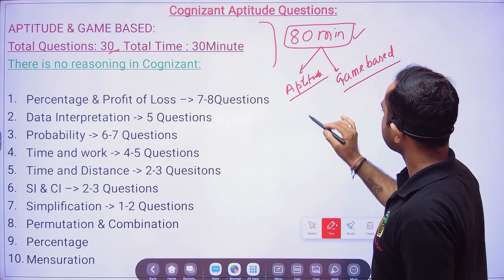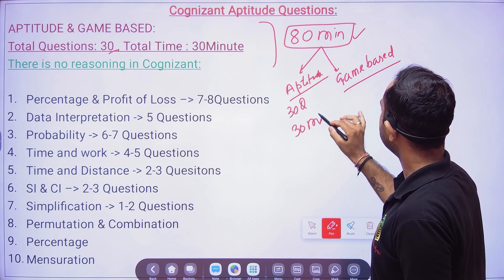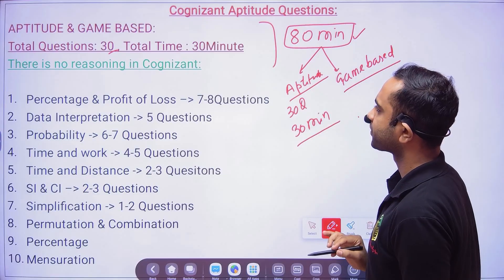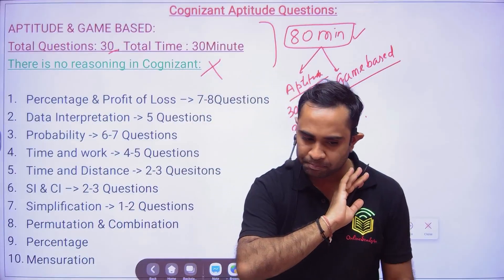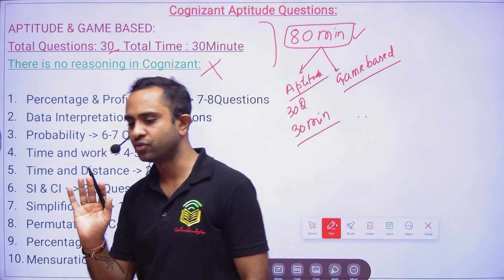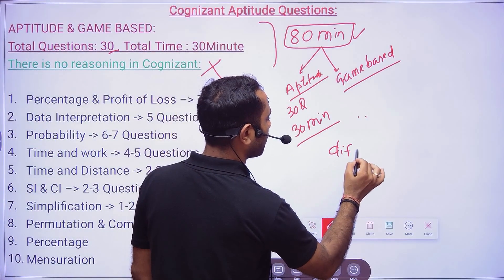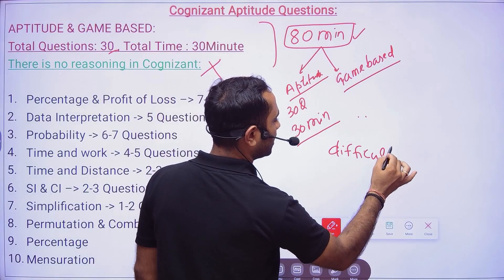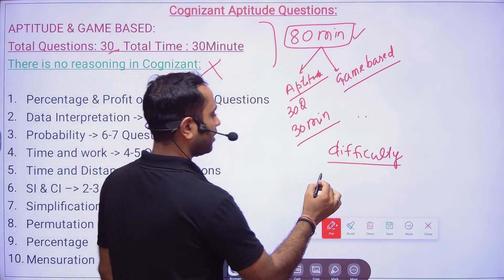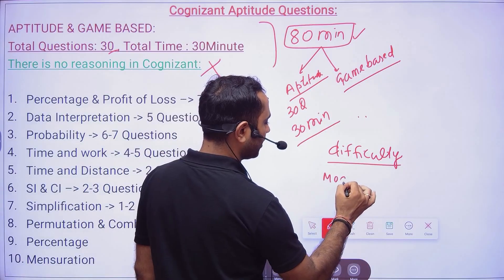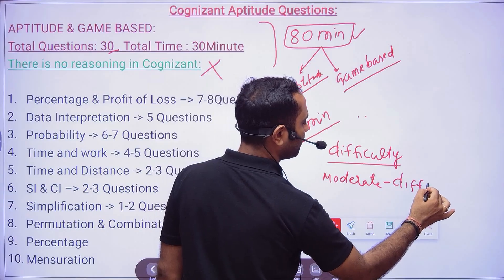For aptitude there will be 30 questions and the time will be 30 minutes. Many students were asking about reasoning — there is no reasoning in the Cognizant exam, please be very clear about that. The difficulty level will be moderate to difficult; it will not be easy. Only a few questions will be easy, otherwise it is difficult to moderate.